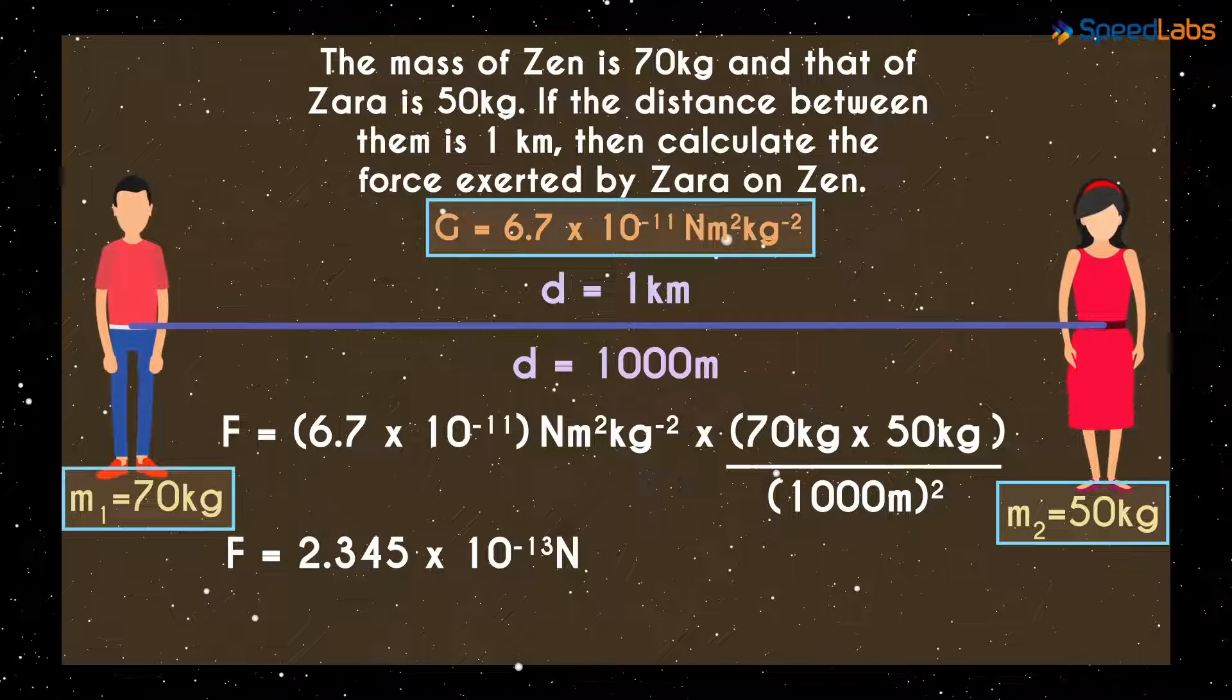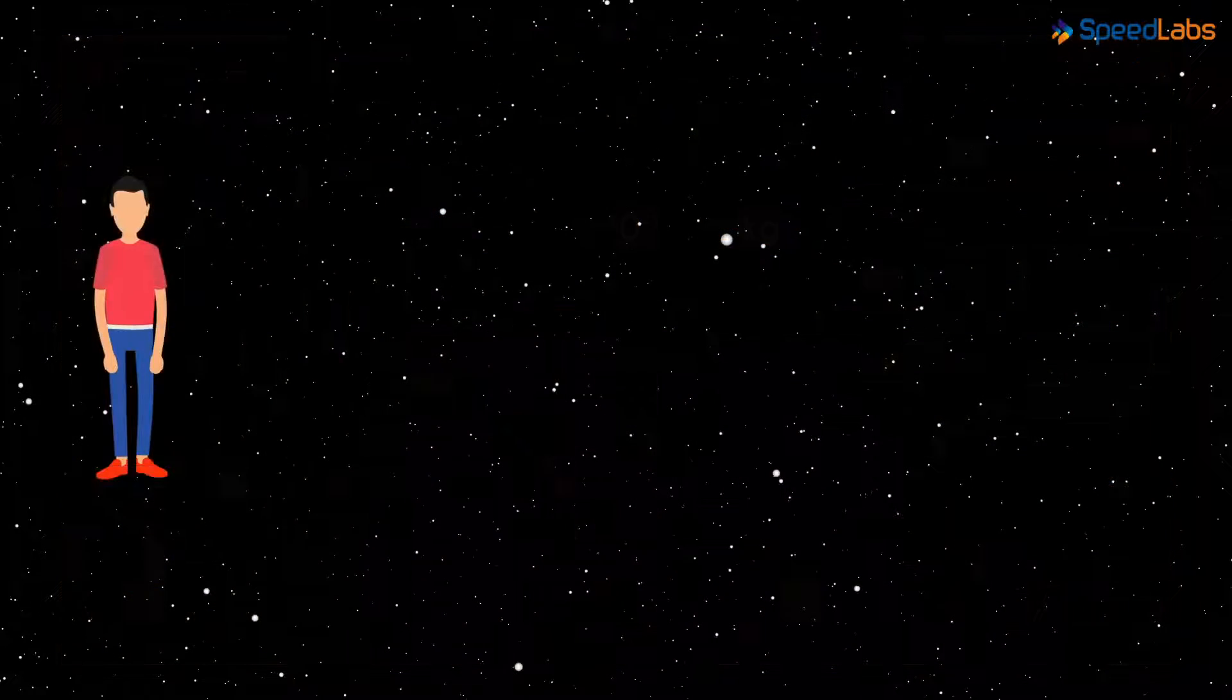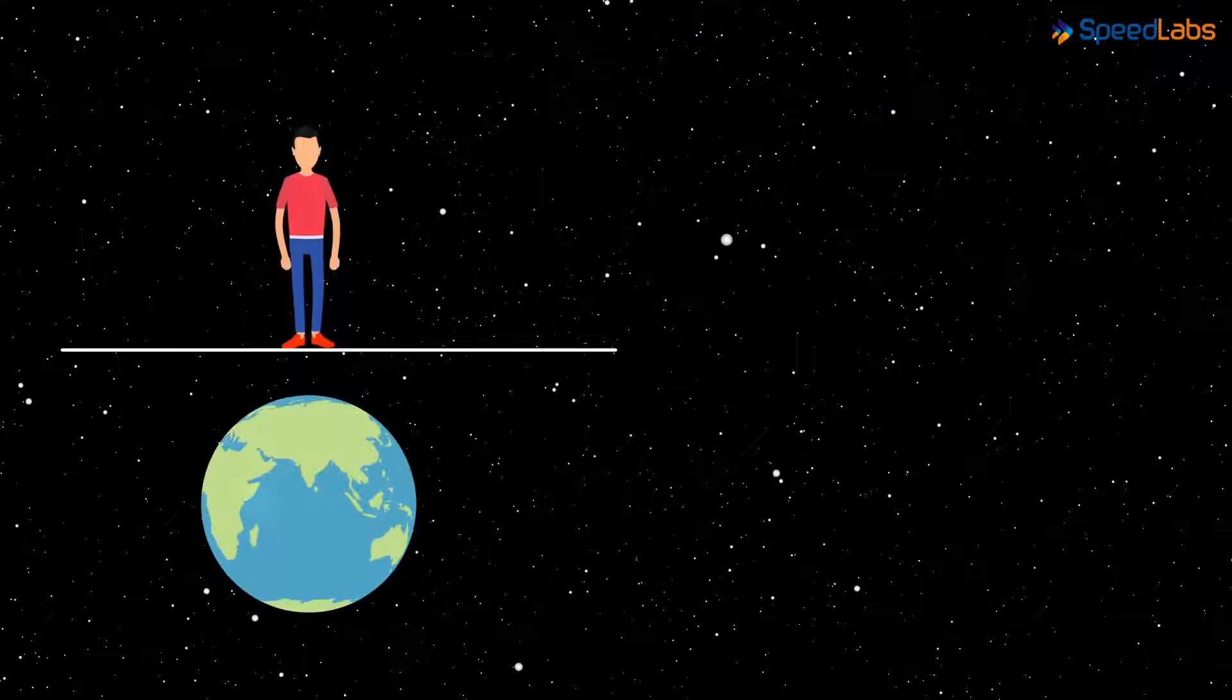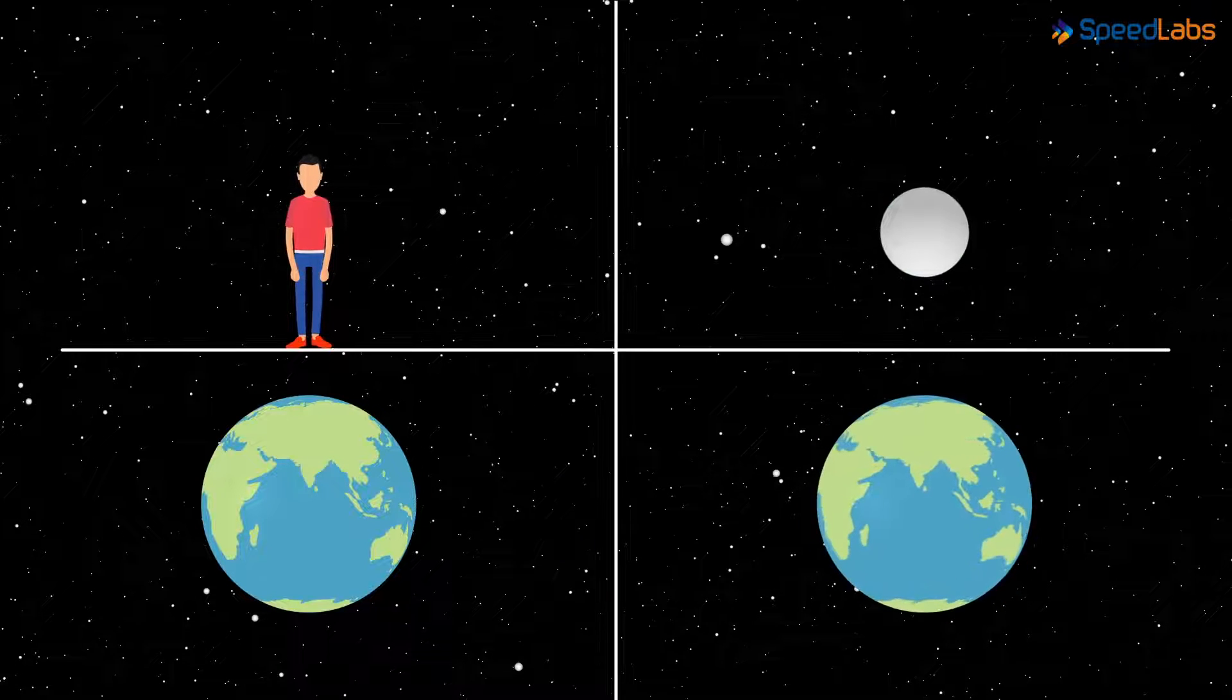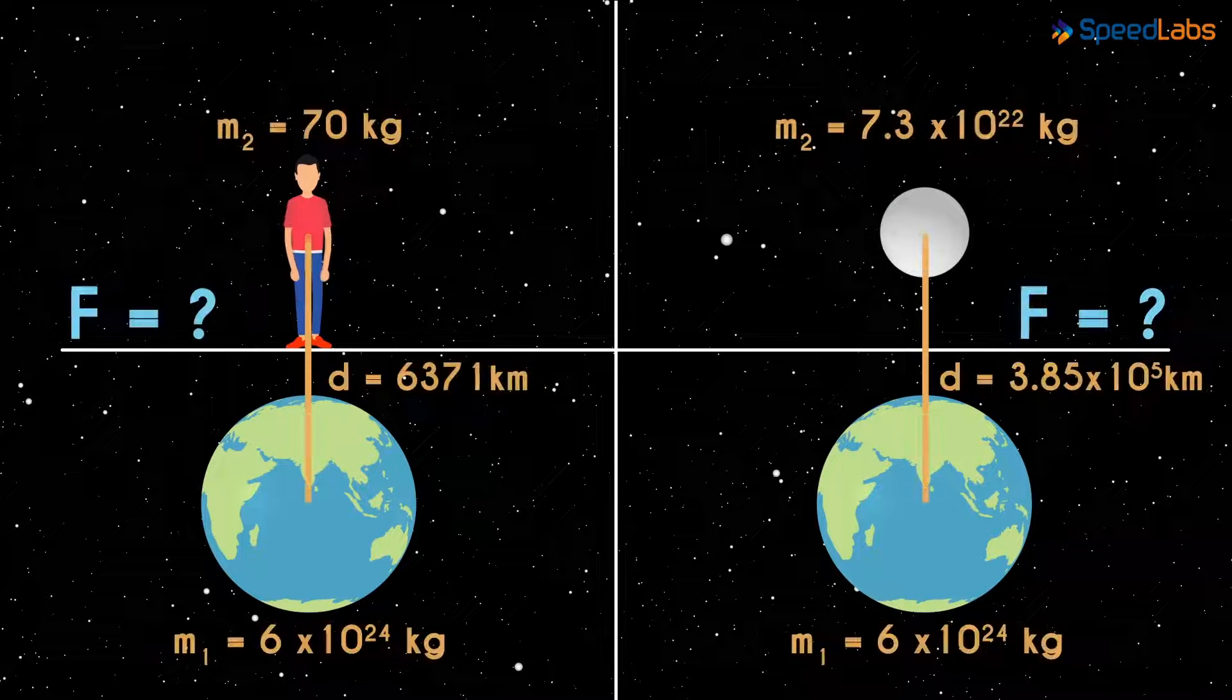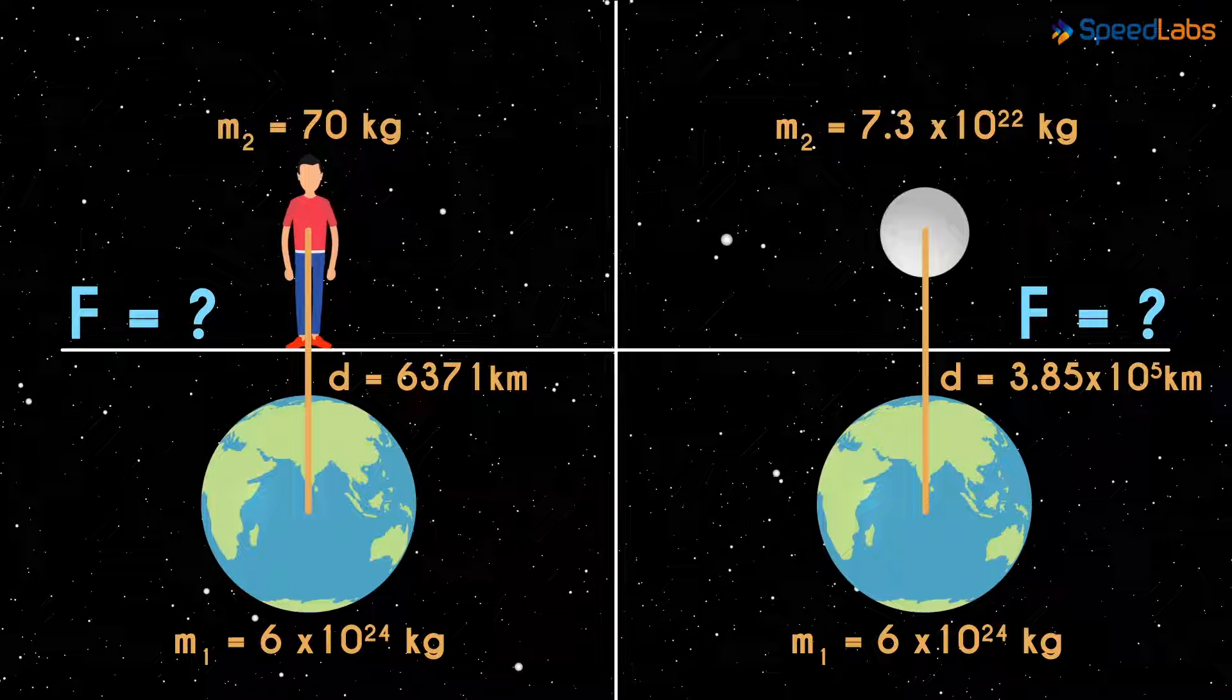How does this force change in different cases? Now let me give you two more scenarios. First, the two objects are the Earth and a human being. Second, the two objects are the Earth and the Moon. Find the force exerted in each of the cases and tell us your answers in the comments section below.